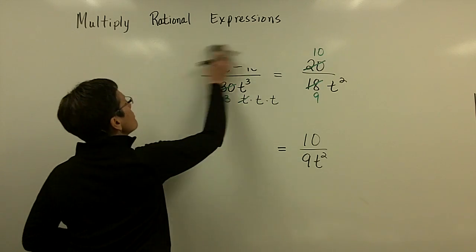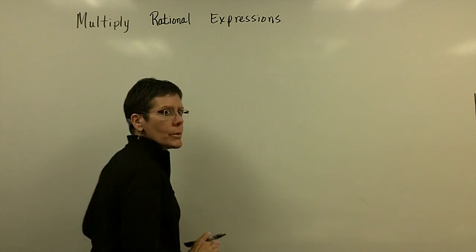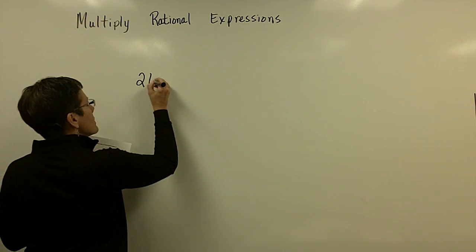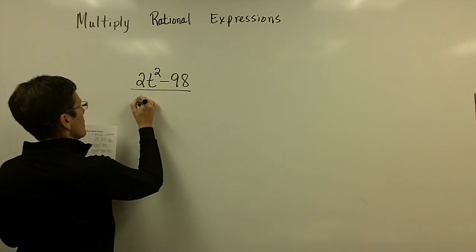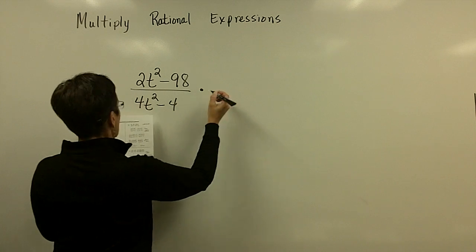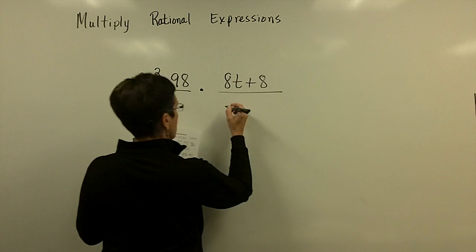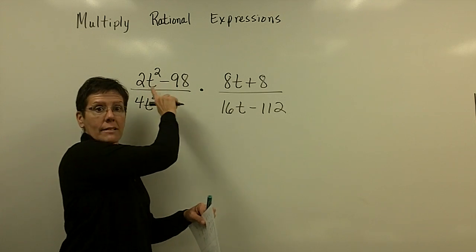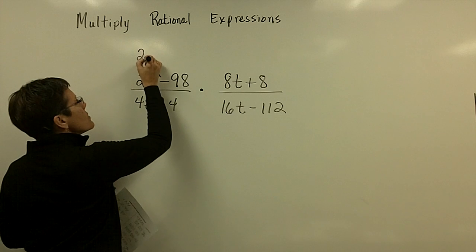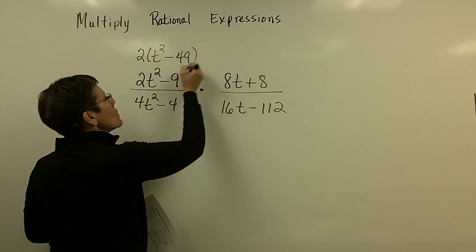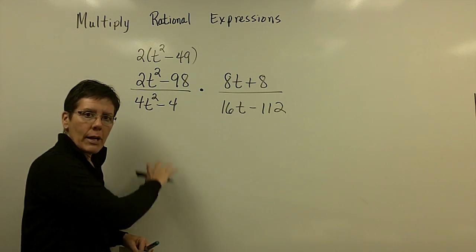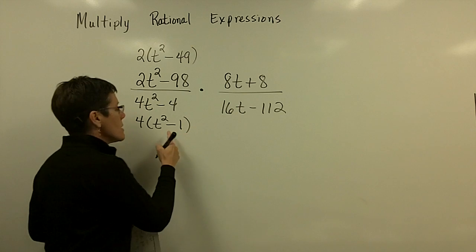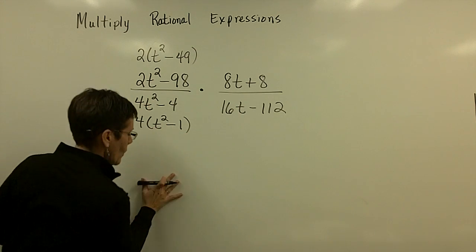Let's do another problem that has quite a bit of factoring involved. This is called multiplying, but we hardly do any multiplying — what we do is factor and factor and factor. Let's take this problem. We're multiplying again, so factor everything. Is there a greatest common factor? Looks like there's a 2, so I'll take that out first. When I get that out, this is the difference of squares, so I'm going to have to factor that again.